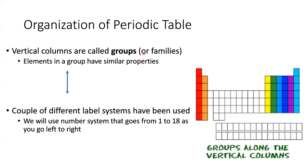Depending on the periodic table you have, there are actually a couple of different labeling systems for the numbers for the groups. What we're going to do is keep it simple and just count straight across. So in this case, this red group would be 1, orange is 2. The middle group in the center — that's got a whole bunch — we're actually going to refer to as the transition metals. Those are going to be groups 3 through 12. And then back where we start to have the colored groups again, we'd have 13, 14, 15, 16, 17, and 18. So we're going to keep it simple and just have groups 1 through 18 left to right.